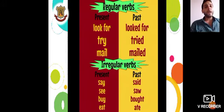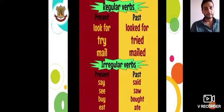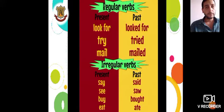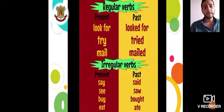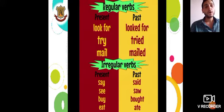Here we have some regular and irregular verbs. Regular verbs. Say — Said. See — Saw. Buy — Bought. Eat — Ate.